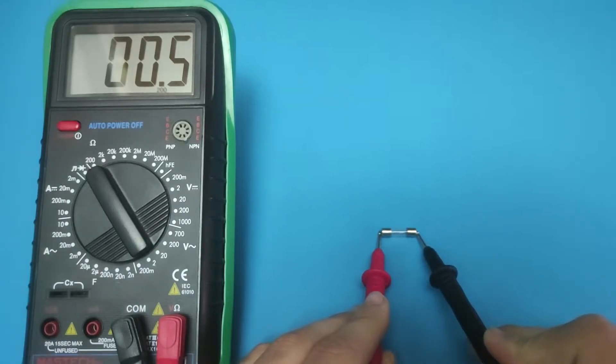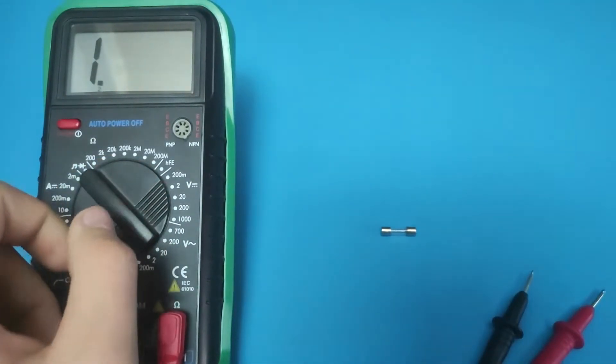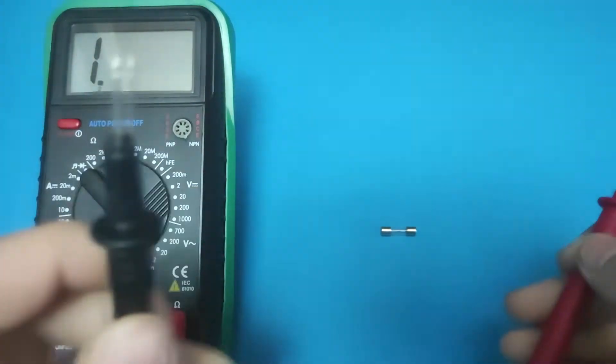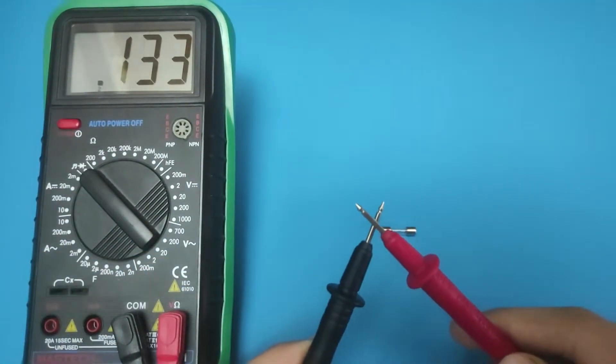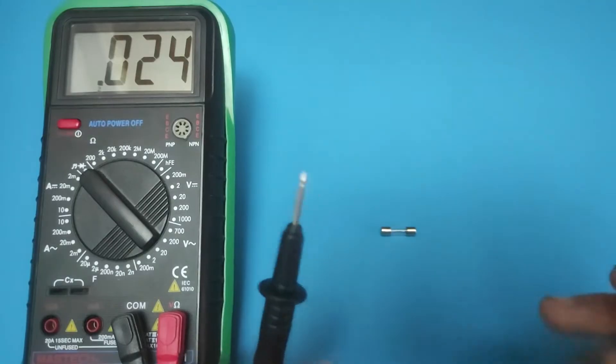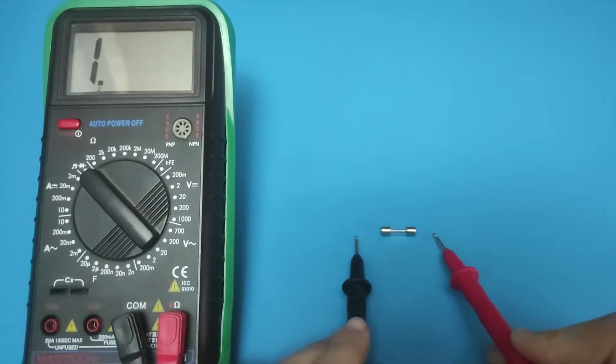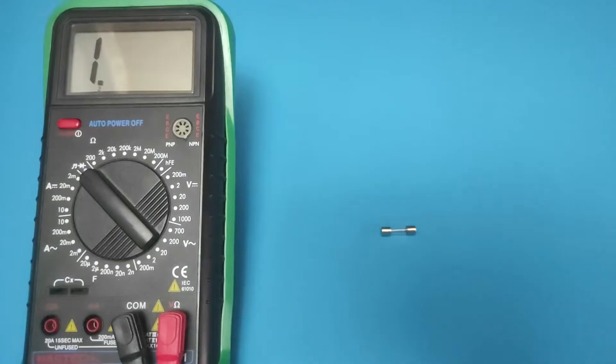The second way is with the continuity mode. If the multimeter beeps, then there is continuity between the two multimeter leads and the metal string is good. As we can see, this fuse works perfectly.